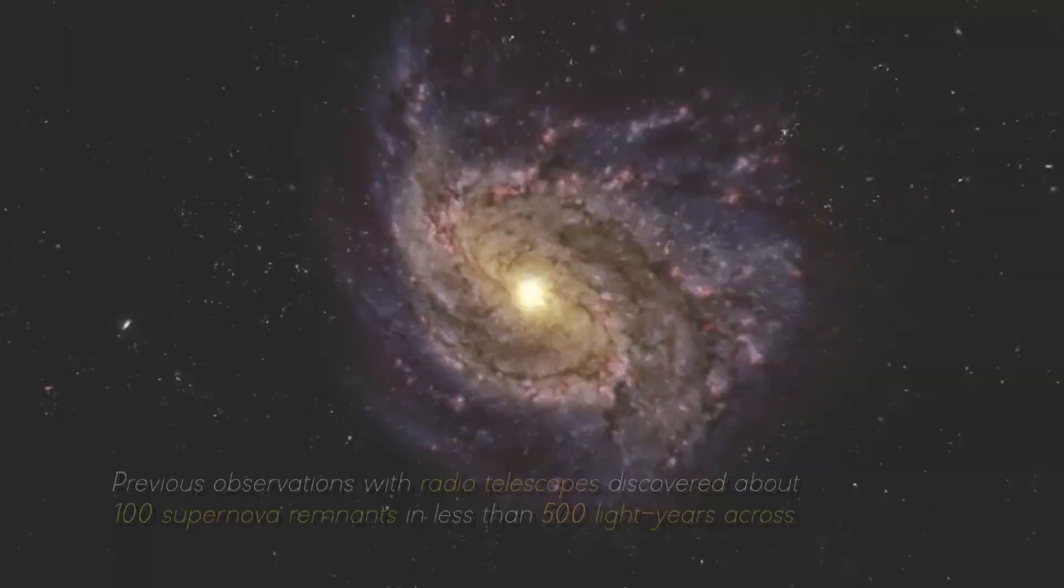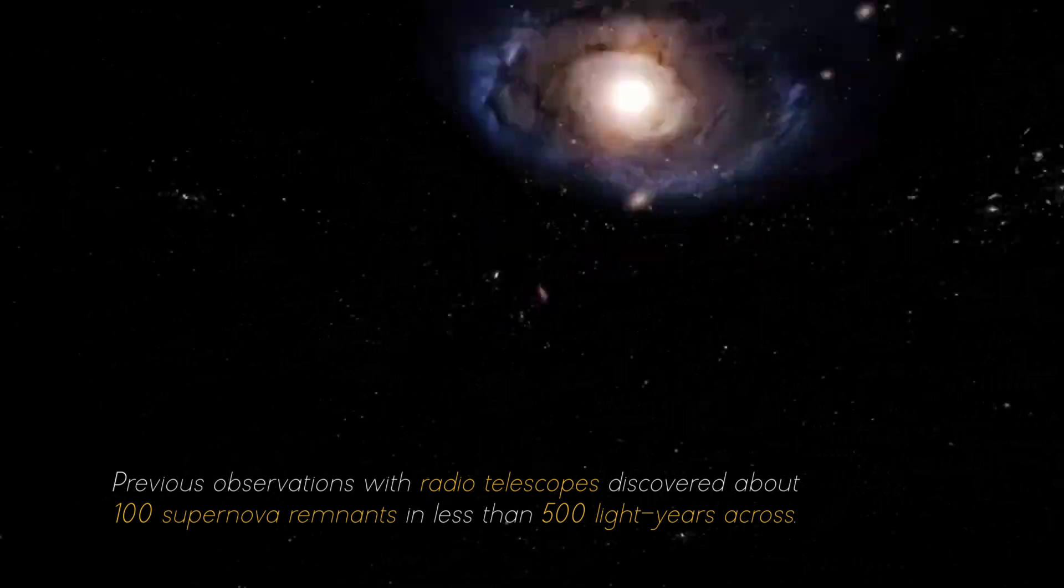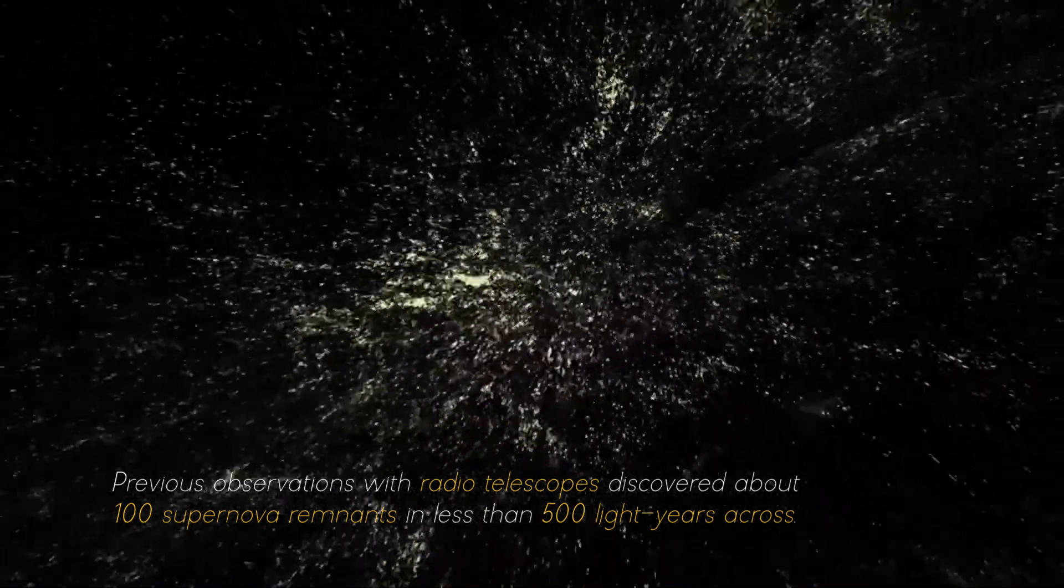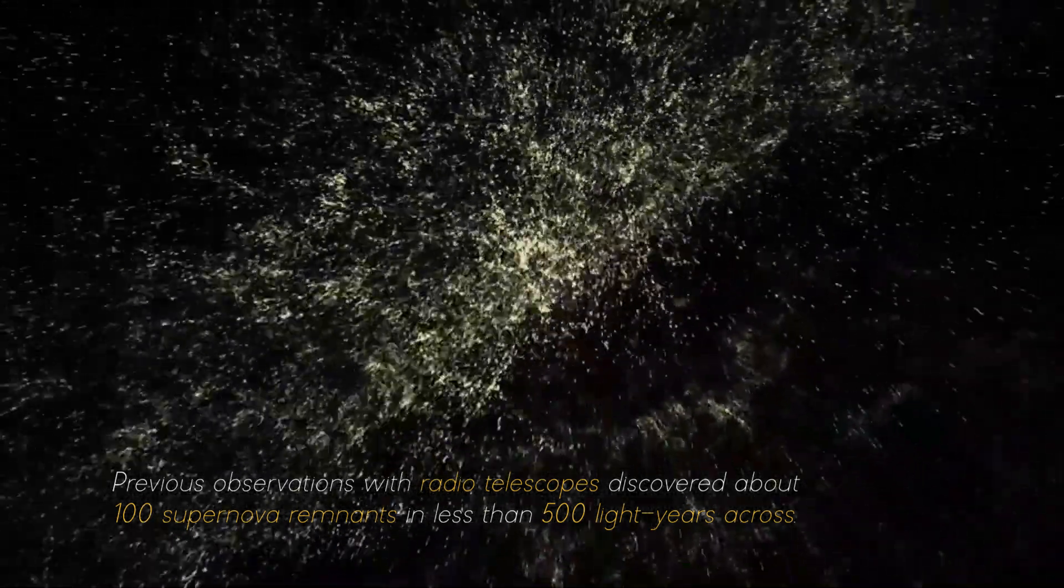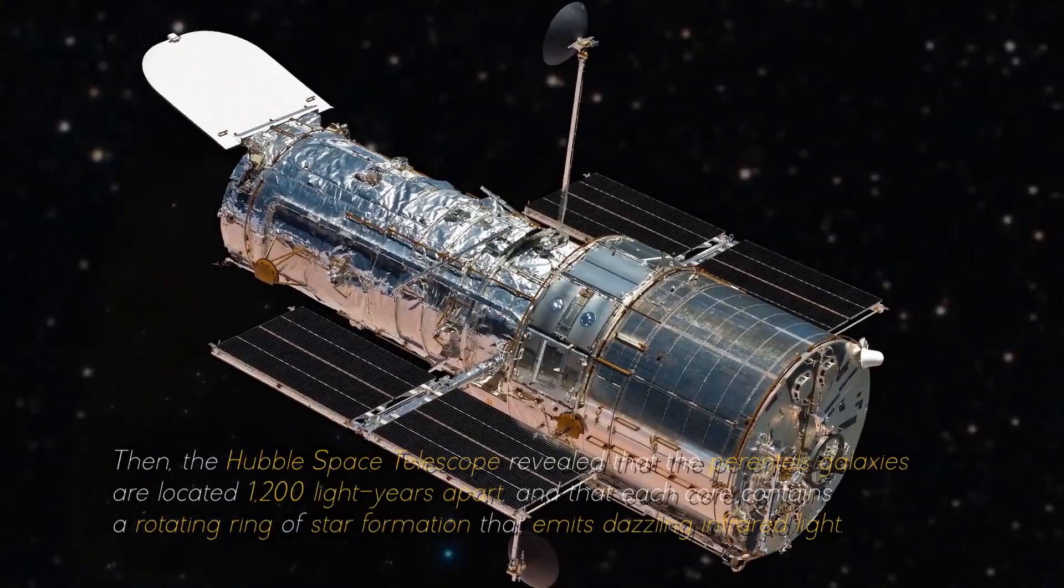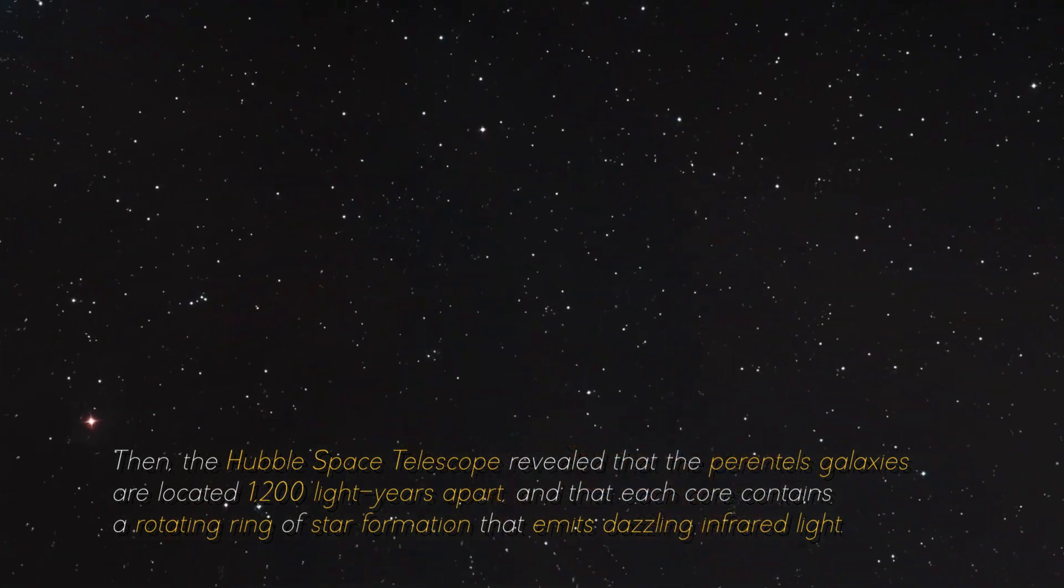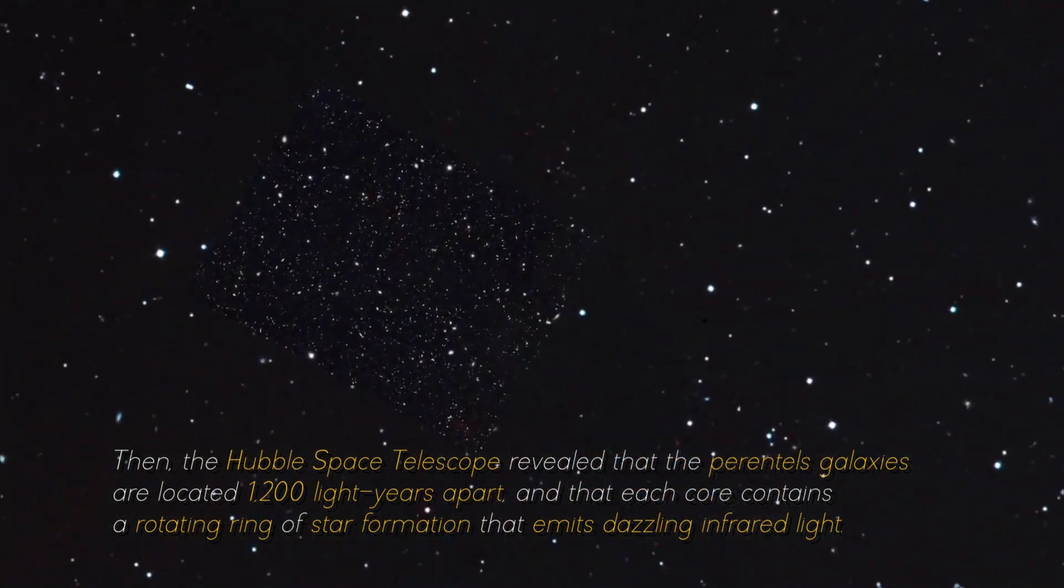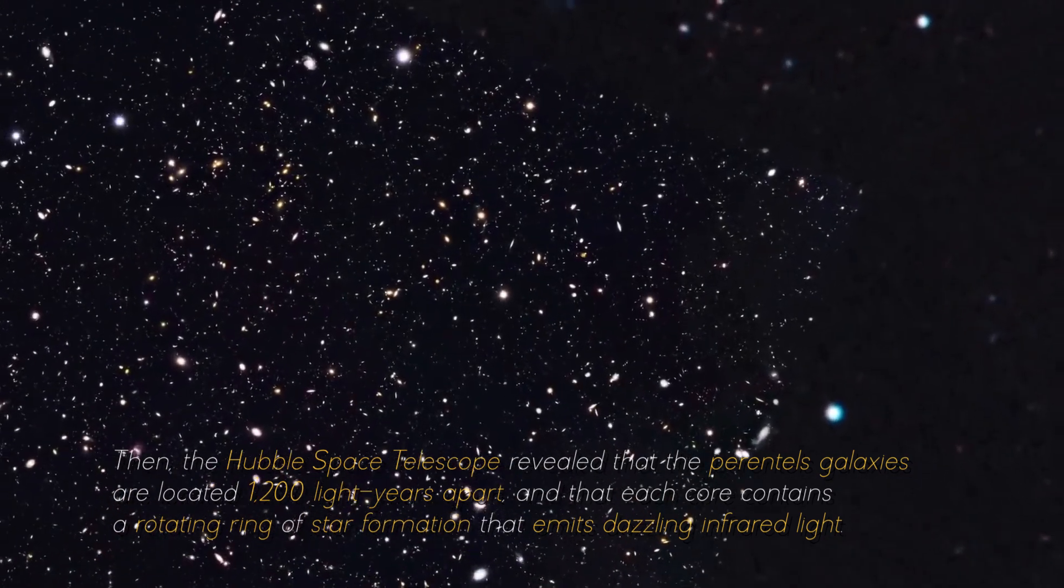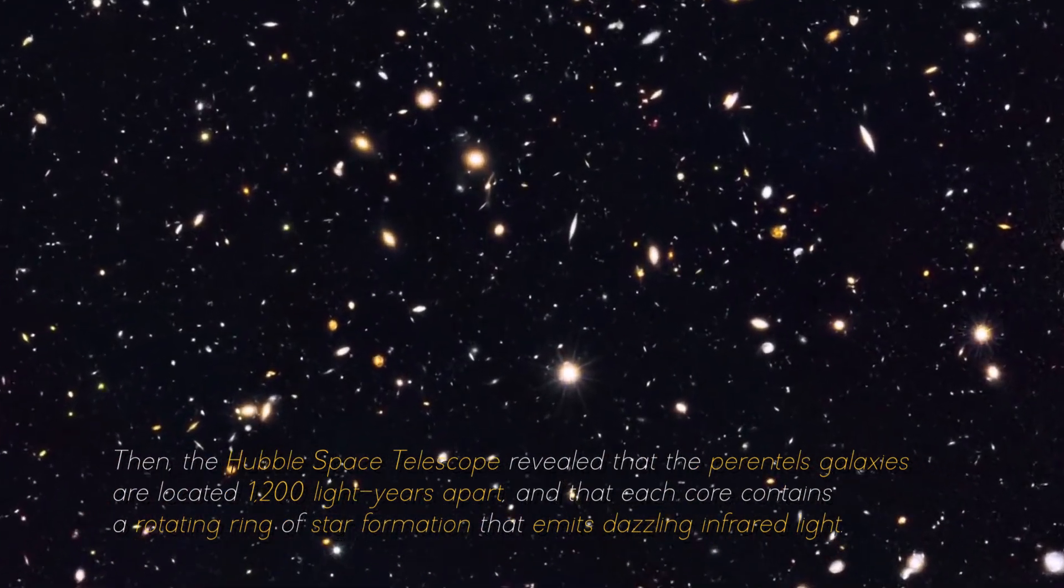This created a dense region about 5,000 light years across that contains about 200 large star clusters. Surprisingly, this small area contains as much gas as the entire Milky Way. Previous observations with radio telescopes discovered about 100 supernova remnants in less than 500 light years across. Then, the Hubble Space Telescope revealed that the parental galaxies are located 1,200 light years apart, and that each core contains a rotating ring of star formation that emits dazzling infrared light.